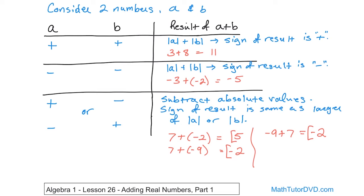The last example: negative 2 plus 1. You're mixing signs, so you subtract: 2 minus 1 equals 1. The sign of the answer matches the larger absolute value — the absolute value of negative 2 is 2, which is bigger than 1 — so the answer is negative 1.